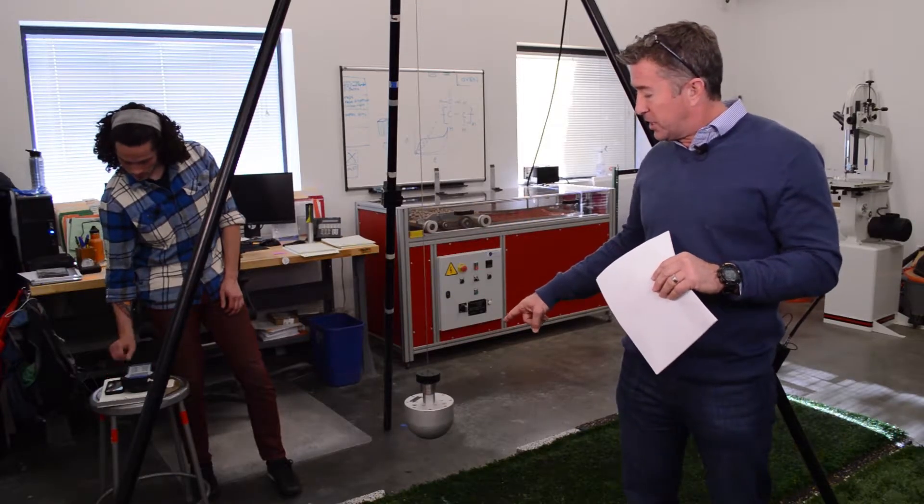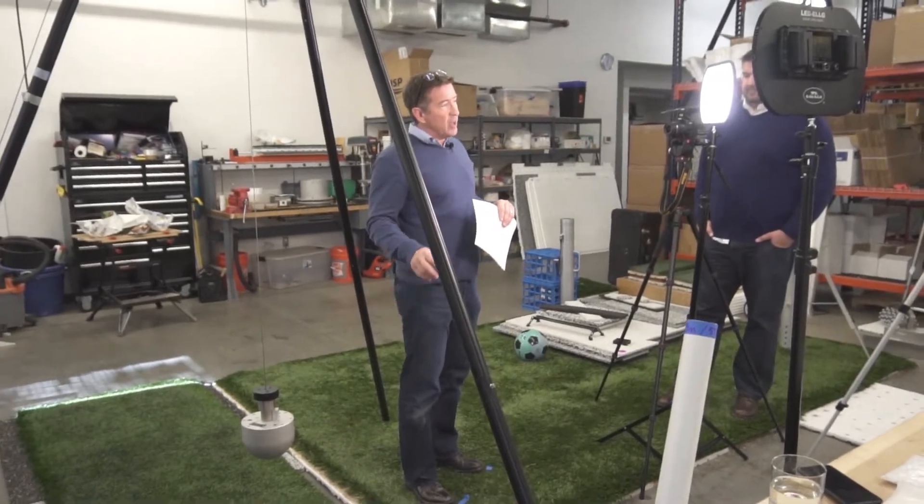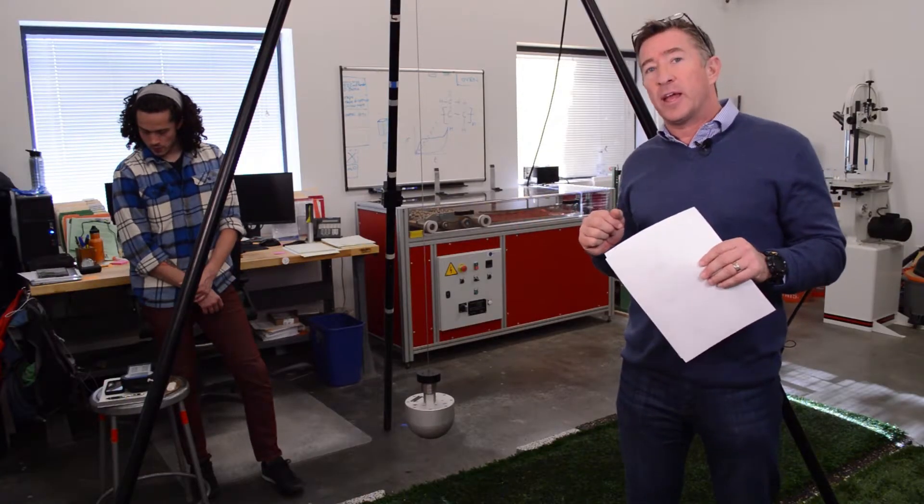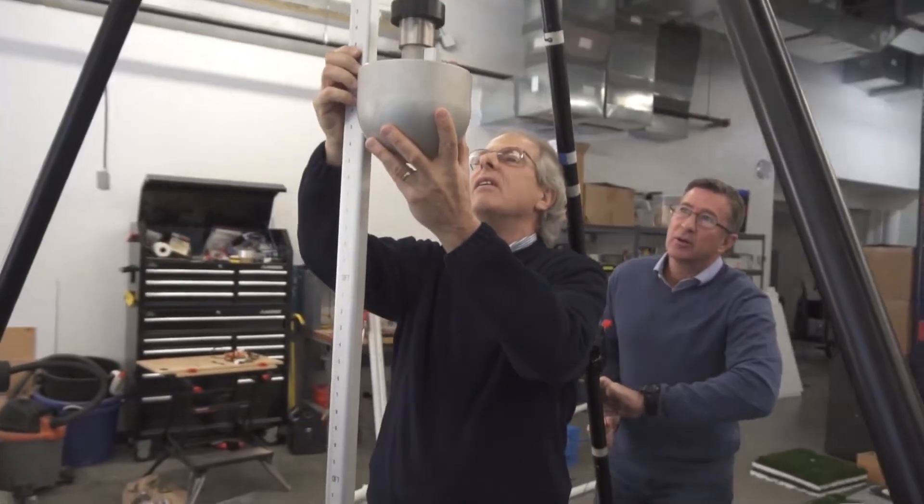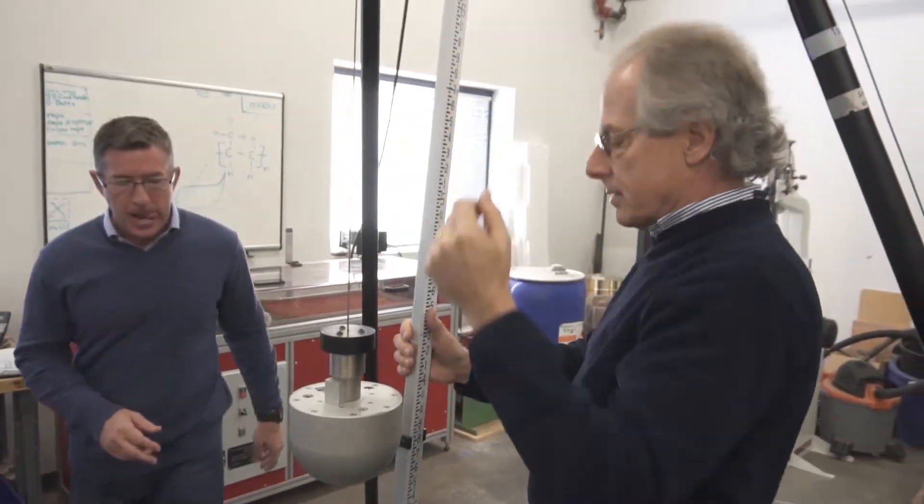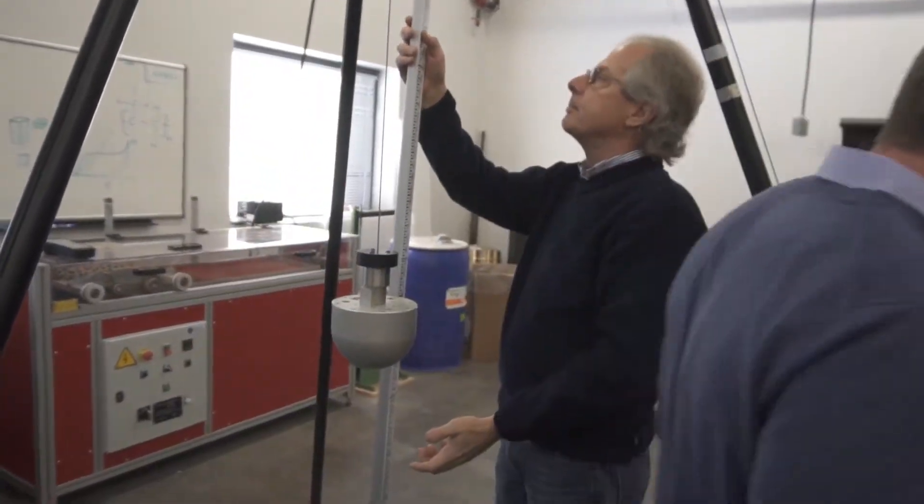It is the ASTM E-missile, which is this head-shaped missile here. This drop test device is used to measure what's called HIC or head injury criterion. The goal is to drop this missile from as high as we can before we cross a threshold of 1,000 HIC.